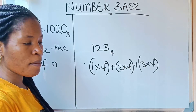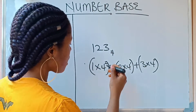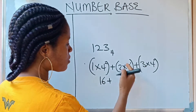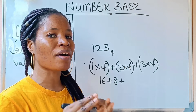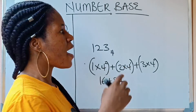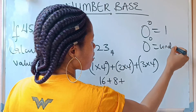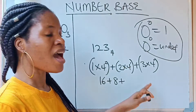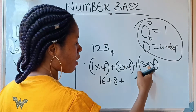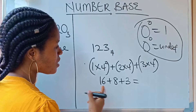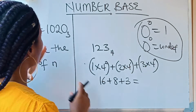Now work out each bracket: 1 times 4 squared is 1 times 16, which is 16. Plus 2 times 4 to the power of 1 gives you 8. Plus 3 times 4 raised to the power of 0 — any number raised to the power of 0 is 1, so that is 3 times 1, which is 3. Add all these up and whatever you get is your answer in base 10. Now let us apply this to solve the question.